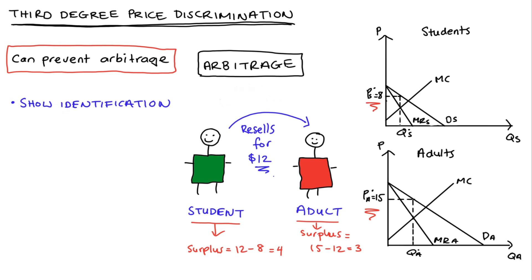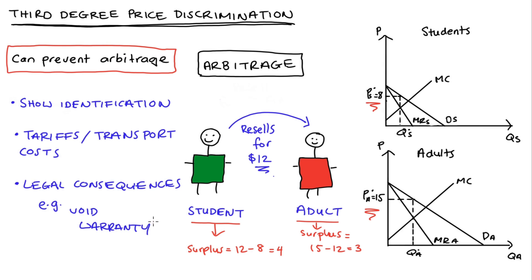Our cinema can prevent arbitrage by requiring that consumers present their ID identifying them as students when they enter. Other ways of preventing arbitrage could include tariffs or transport costs — if a producer wants to set different prices across different countries, a large transport cost or tax on imports could prevent the lower-price consumer from reselling to the higher-price consumer because that transfer becomes expensive. Alternatively, there could be legal consequences or other implications associated with reselling, like a void on a warranty if a product is resold. These sorts of things can make arbitrage unattractive and allow firms to engage in third-degree price discrimination.